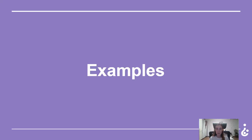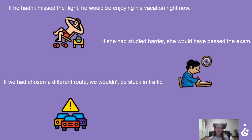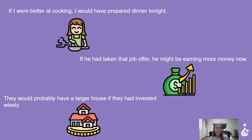Now let's look at some examples. 'If he hadn't missed the flight, he would be enjoying his vacation right now.' 'If she had studied harder, she would have passed the exam.' 'If we had chosen a different road, we wouldn't be stuck in traffic.' 'If I were better at cooking, I would have prepared dinner tonight.' 'If he had taken that job offer, he might be earning more money now.' 'They would probably have a larger house if they had invested wisely.'